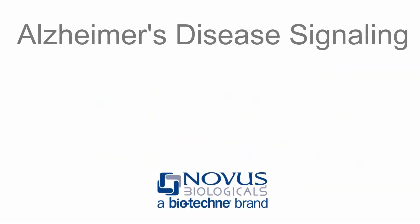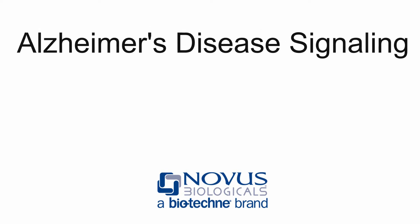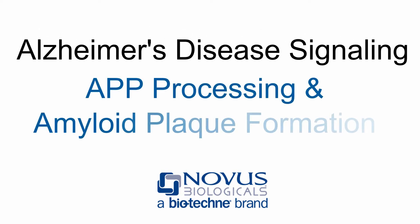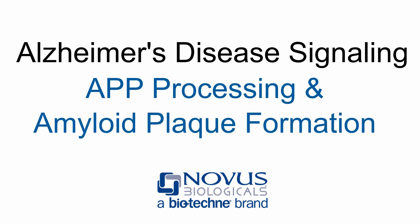In this video, we will cover the signaling events involved in the processing of amyloid precursor protein, commonly called APP, that leads to the formation of amyloid plaque.